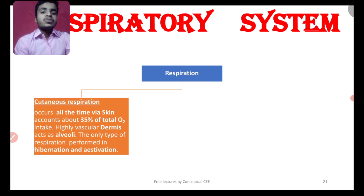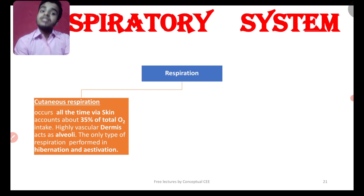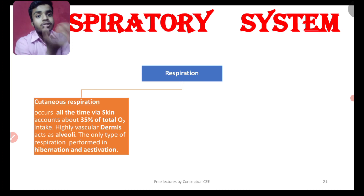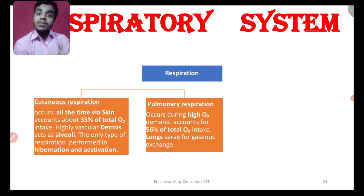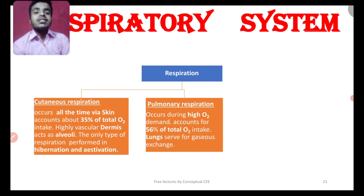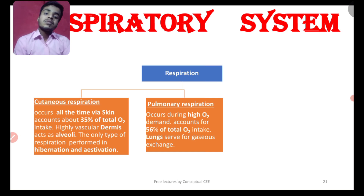The first type is cutaneous respiration. Cutaneous respiration occurs through the skin and occurs all the time — during hibernation, estivation, and normal activity. Cutaneous respiration accounts for 35 percent of the total oxygen consumption. Next is pulmonary respiration, which accounts for the maximum oxygen consumption.